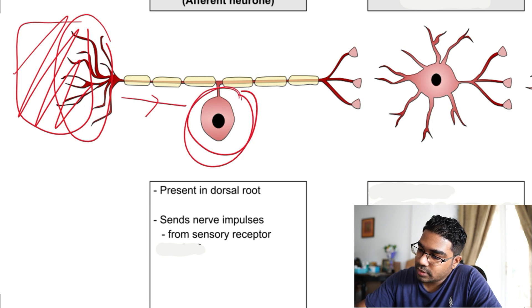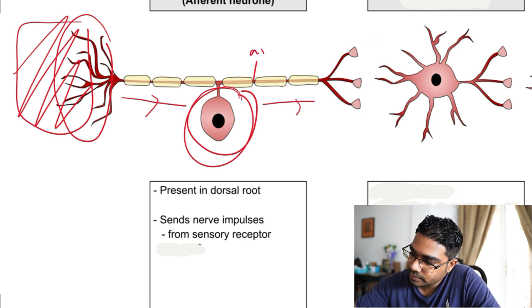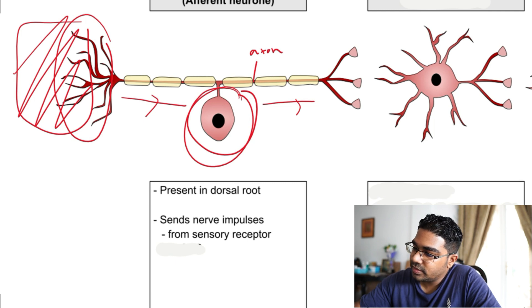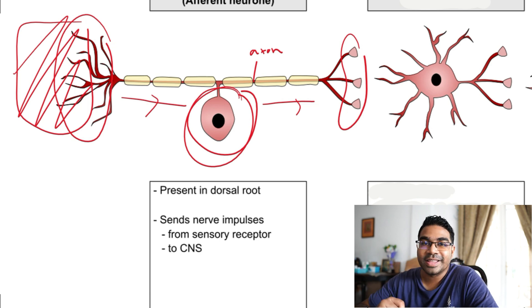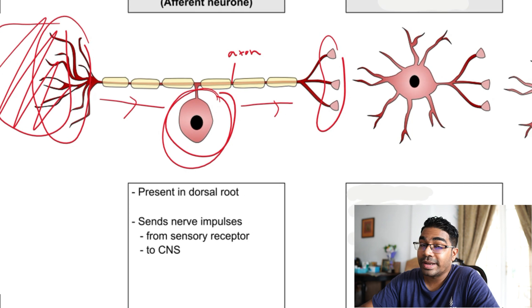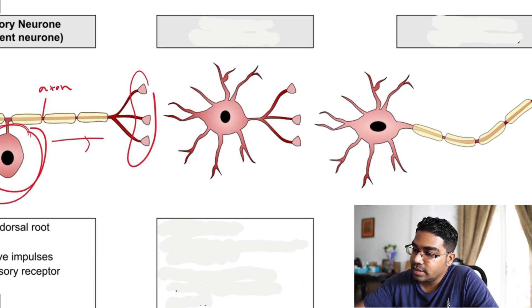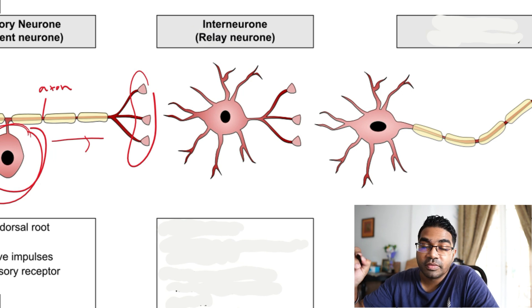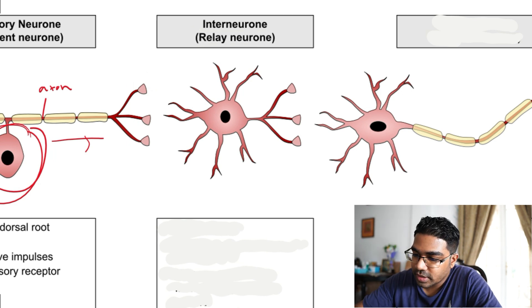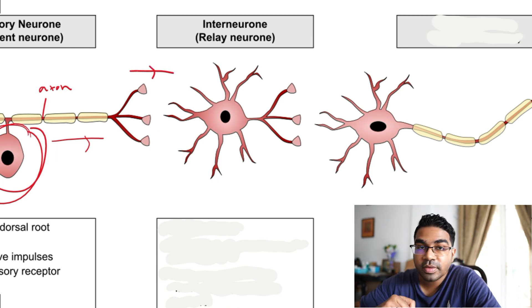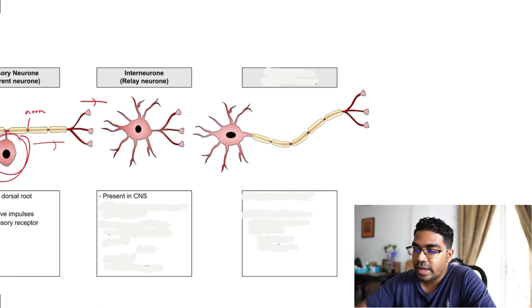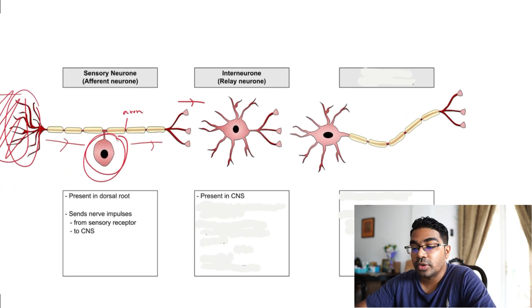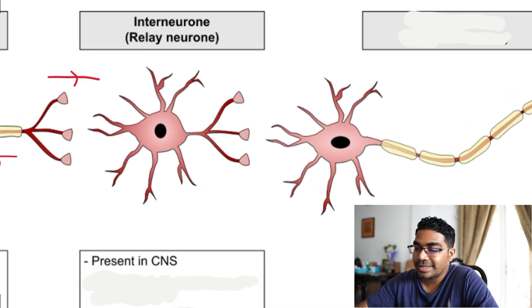The impulse travels from the sensory receptor to the cell body, then out through the axon via the synaptic knobs, which connect to the CNS. The CNS is where the next neuron is found: the interneuron, sometimes called the relay neuron. The interneuron is present in the central nervous system and lies between the other two neurons.